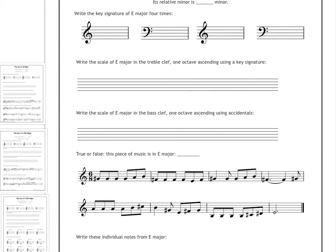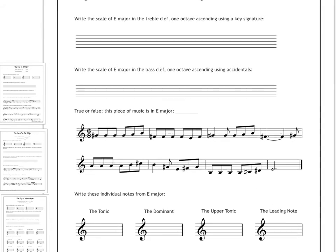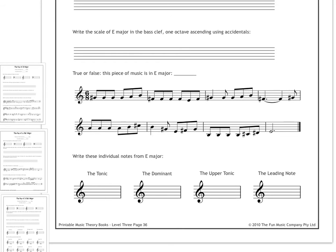Practice writing that scale a few different ways. In the treble clef, one octave ascending using a key signature. In the bass clef, one octave ascending using accidentals. So, no key signature this time, but put the sharps where they belong, in front of each proper note. And then for each page, you're also going to have a few little practice exercises. This one, for example, asks you, true or false? This piece of music is in E major. There's no key signature given, but you need to analyze the accidentals and decide for yourself if these accidentals correlate. Do they agree with the key signature of E major? So, is this piece of music in E major?